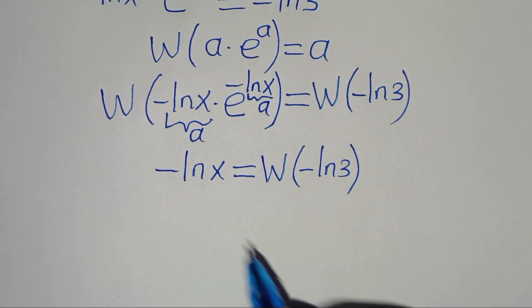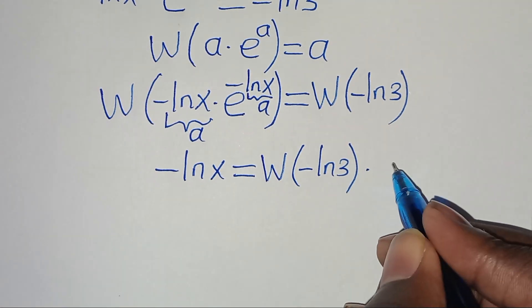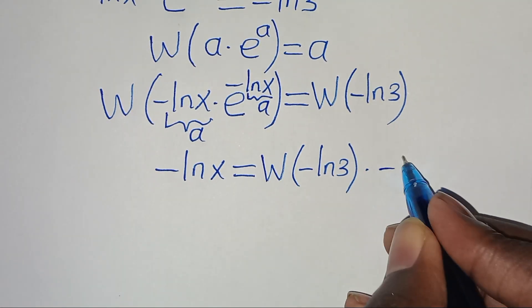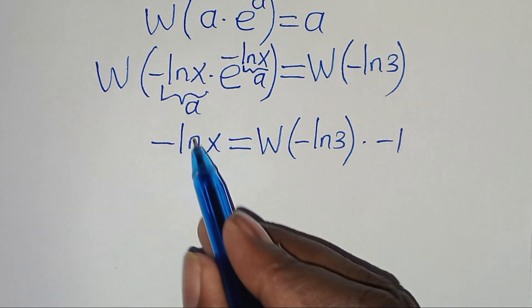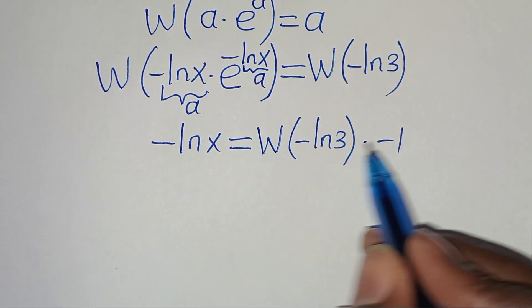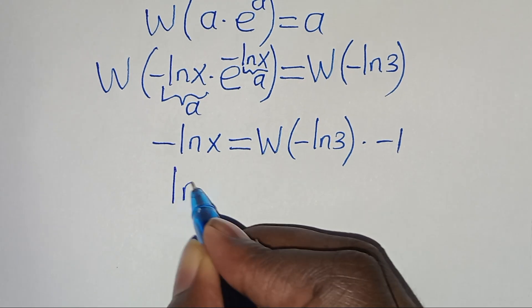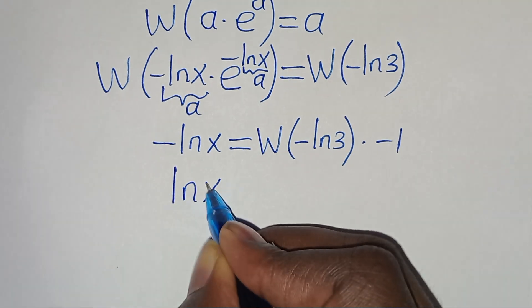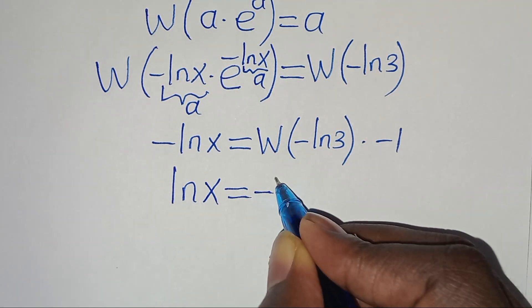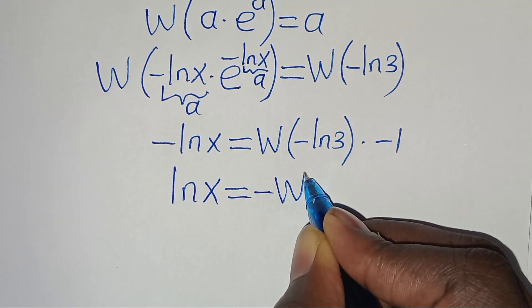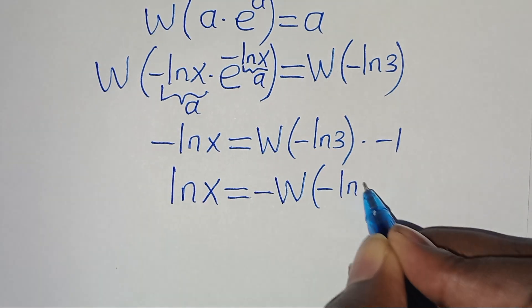Now let's multiply both sides by minus 1, so that ln(x) is equal to minus the Lambert W function of minus ln(3).